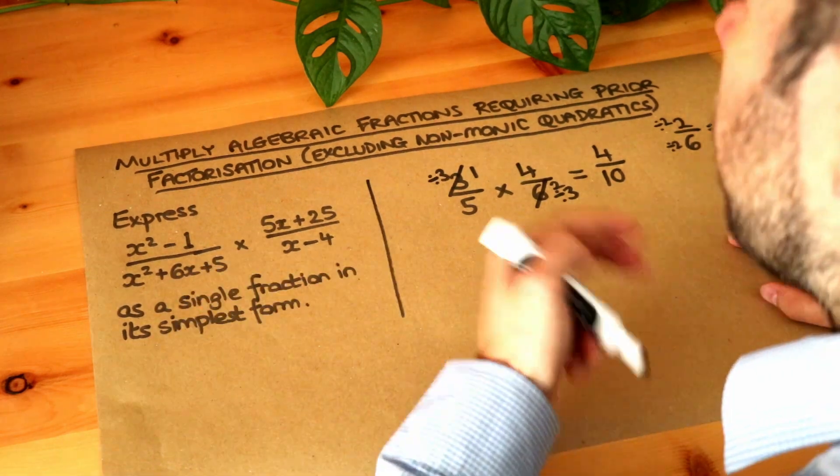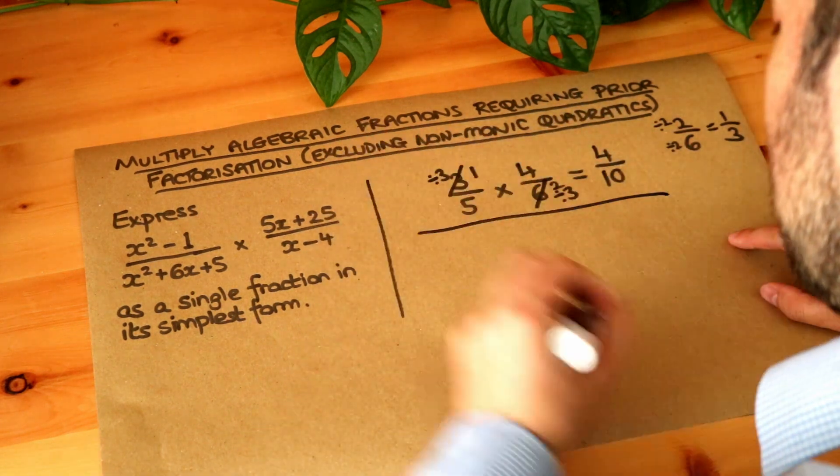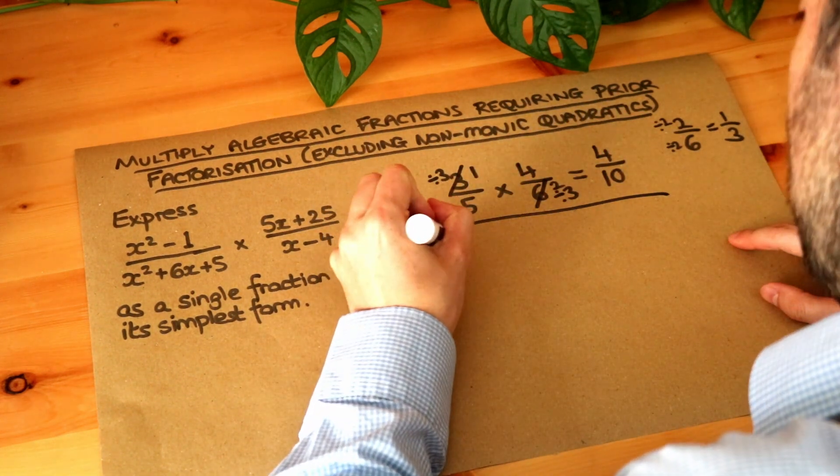Now we're going to do the same thing here but in order to have stuff to divide by we need to factorize everything we can first. So let's do that. I'm just going to copy the question.